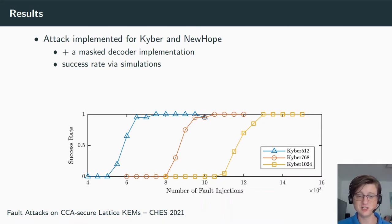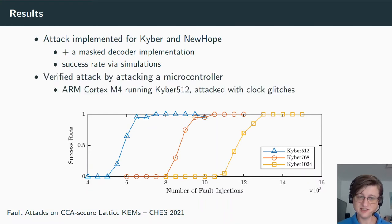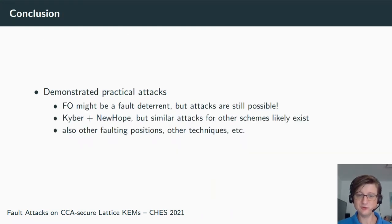You can see the outcome below. Of course, for larger, more secure parameter sets we need more faults. For Kyber, for the smallest parameter set Kyber512, we need about 6,000 faults. For the largest parameter set, we need like 13,000 faults to get a good success rate. But to show that this attack is also really practical, we actually ran this attack. We ran Kyber512 on a microcontroller and injected clock glitches in this microcontroller, and we successfully recovered the key on this microcontroller.